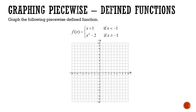Now let's look at actually having to graph a piecewise function given a formula. For this piecewise function we're given two pieces: one piece for x values that are less than negative 1, and another piece for x values that are greater than or equal to negative 1. I'm going to use two different colors so that you can see the two different pieces graphed, but remember this is all the same function.